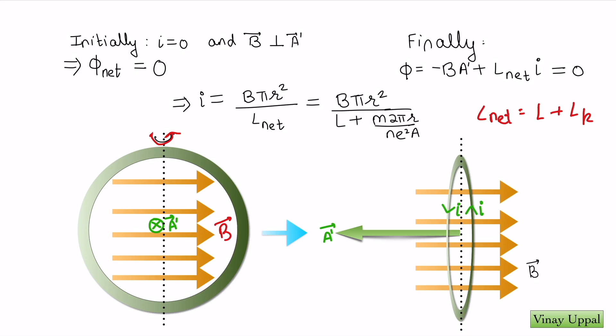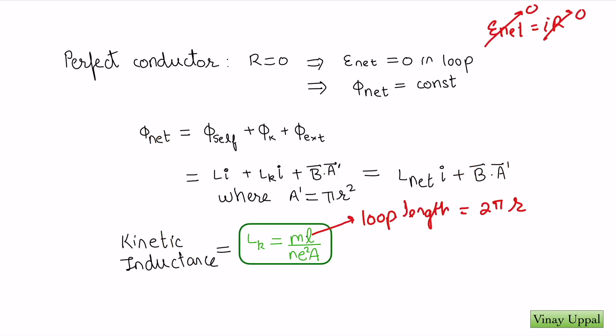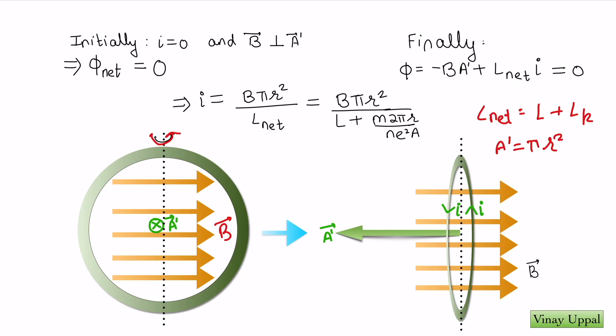Now it's very straightforward. All you have to do is equate this to 0 because the total flux has to be 0. Current will therefore be B into A dash, which is πr squared. Here A dash is πr squared, the loop area, divided by the net inductance, and the net inductance is once again L plus LK. I already showed you what LK is: ML by NE squared A, where you substitute L as 2πr. That's it. That's how you get the final current in the loop. It's a very straightforward solution once you have learned the concept of kinetic inductance.